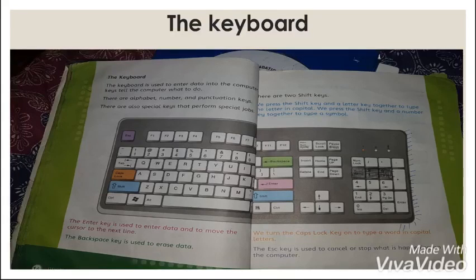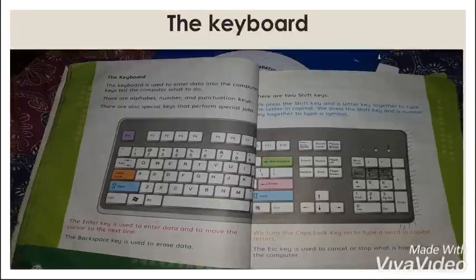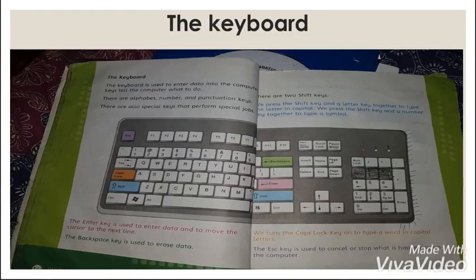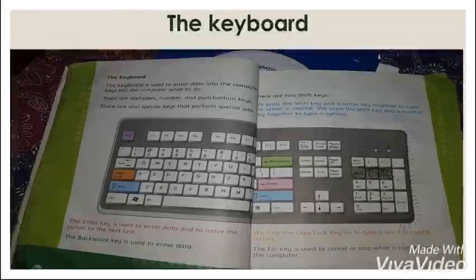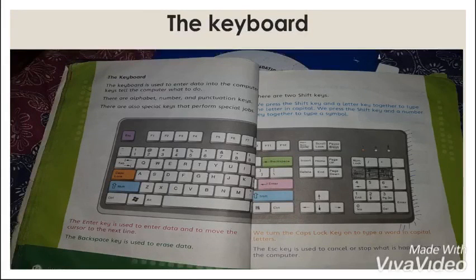The pink one is enter key that is used to enter data and move to next line. The green one is backspace key that is used to erase data. Then there is caps lock key which is orange in color, that is used to capitalize the letters. Then in blue there is shift key which is used with combination of different keys to make them capital or to type symbols. Then last there is purple key that is called escape key, which is used to stop or cancel anything happening in computer.